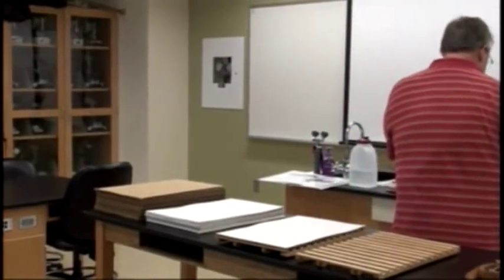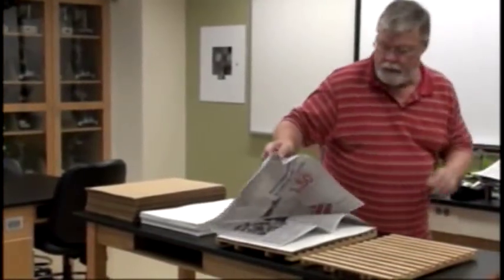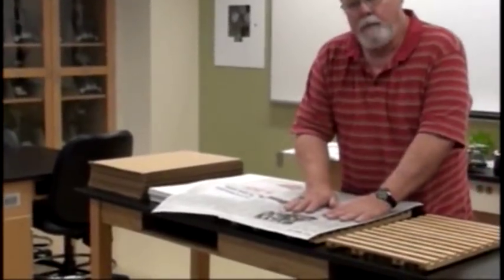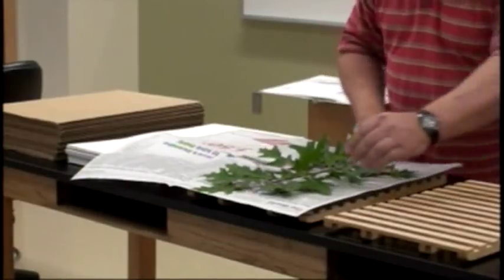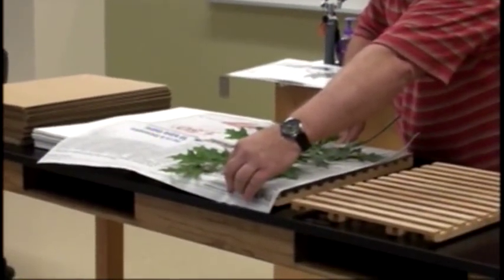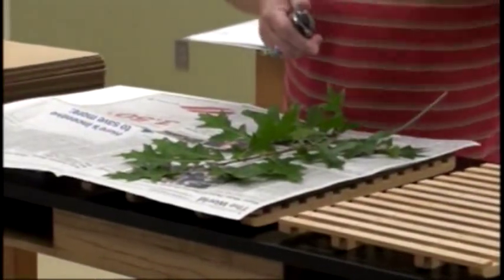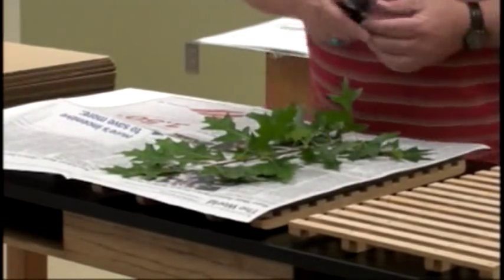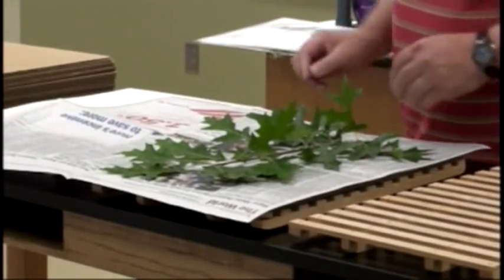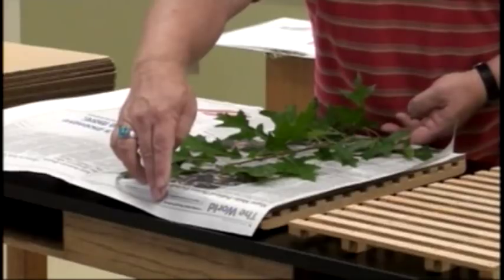The next thing that we do is take a piece of newspaper. This happens to be the Washington Post a couple of days ago. It doesn't matter if it hangs over the edge of the press. We have a piece of newspaper here, and this is what we put our plant in. Now, the plant in this case extends a little bit over the length of the press itself. You take your pruning shears and snip off a little bit of the base.